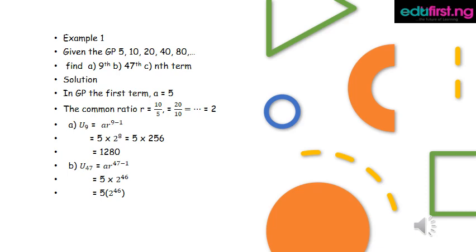Solution: in this GP, the first term a equals 5. The common ratio r equals 10 divided by 5, or equivalently the third term divided by the second term, which gives r equals 2.